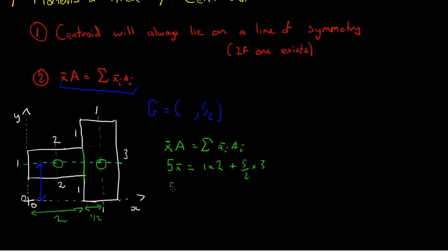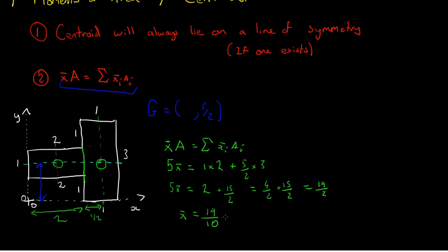So now if we deal with this, we end up with 5 x-bar is equal to 2 plus 15 over 2. Writing 2 in halves so that we can add these terms, we end up with 4 over 2 plus 15 over 2, which is equal to 19 over 2. Therefore, dividing by 5 to get x-bar, we get x-bar as 19 over 10, which is a little bit less than 2 — which is kind of what we expected, as we expected the centre of area to line up approximately here. So we can fill in the x-coordinate, which is 19 over 10.